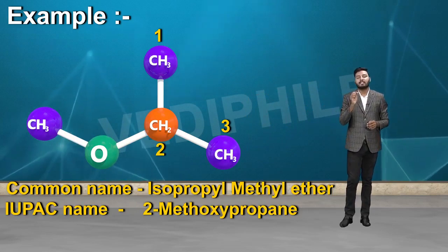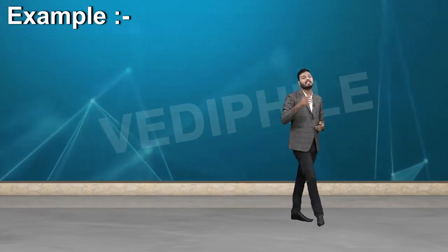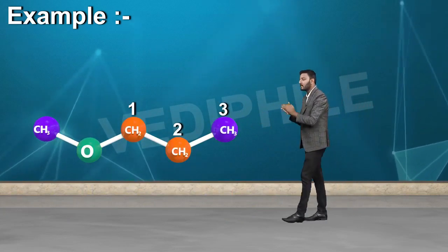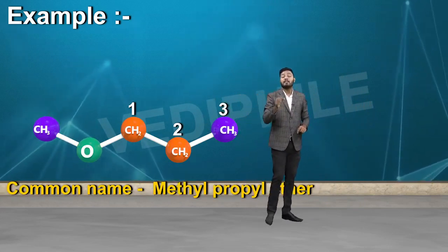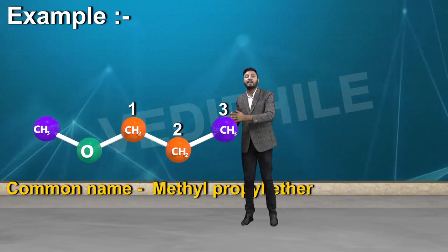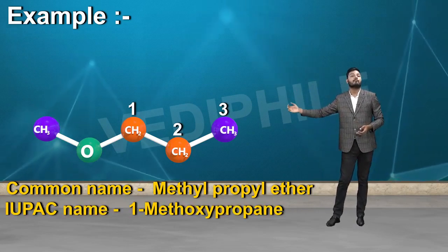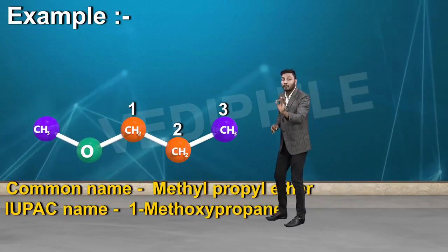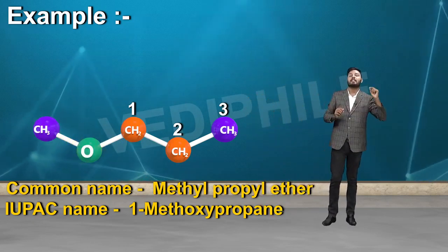समझ में आया कि कैसे इसकी naming करी? एक और example लेते हैं: CH3-O-CH2-CH2-CH3। इसका common name होगा methyl-propyl-ether। Methyl पहले है क्योंकि alphabetical order में M पहले आता है और P बाद में। IUPAC name होगा 1-methoxypropane, क्योंकि first carbon से ही methoxy group लगा हुआ है।